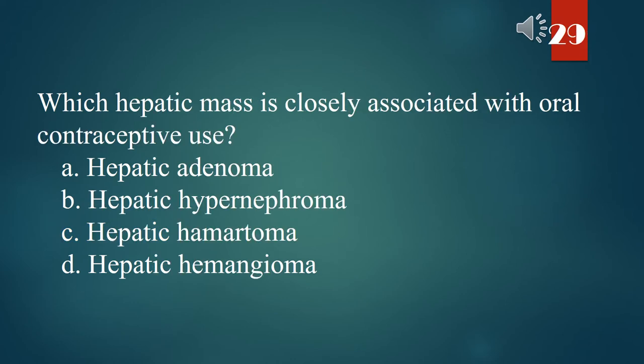Which hepatic mass is closely associated with oral contraceptive use? A. Hepatic adenoma. B. Hepatic hypernephroma. C. Hepatic hamartoma. D. Hepatic hemangioma. The answer is A. Hepatic adenoma.